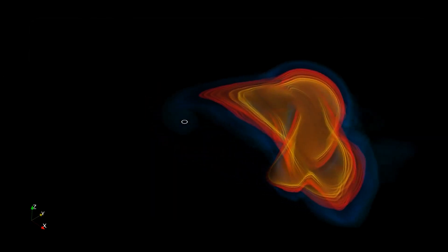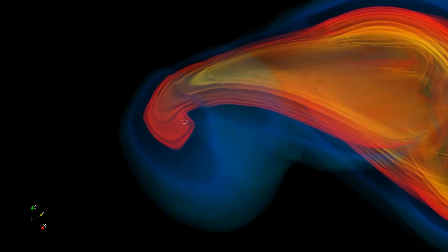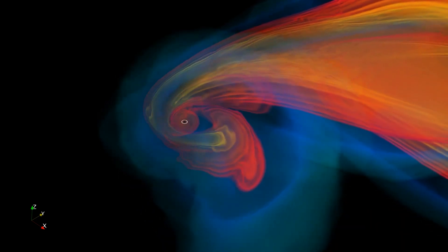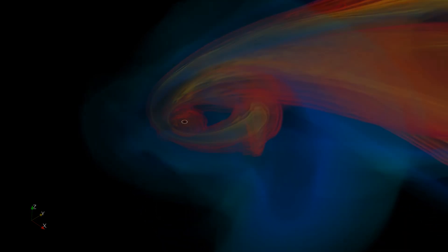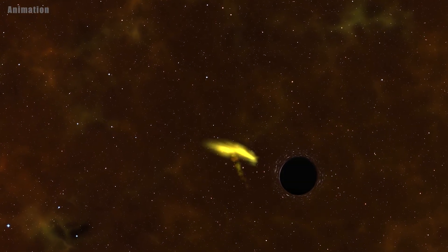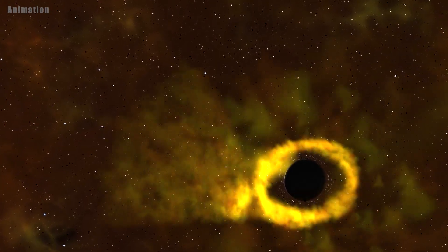TDEs occur when a star gets too close to a black hole and is torn apart by the immense gravitational forces. The star is stretched and elongated into a thin, spaghetti-like structure known as spaghettification. The debris from the disrupted star is then pulled into the black hole, creating a bright flare of radiation that can be seen from millions of light years away.